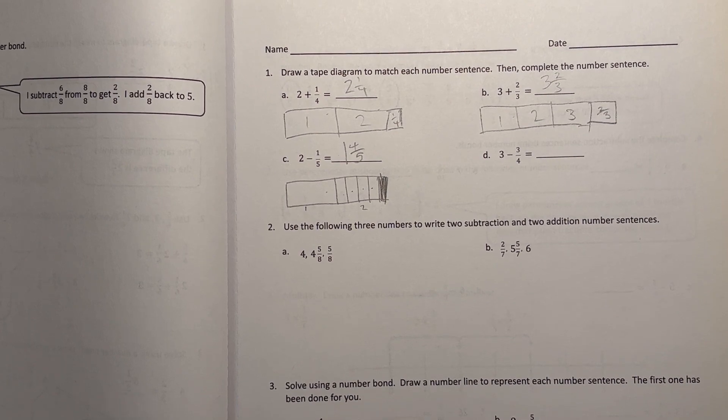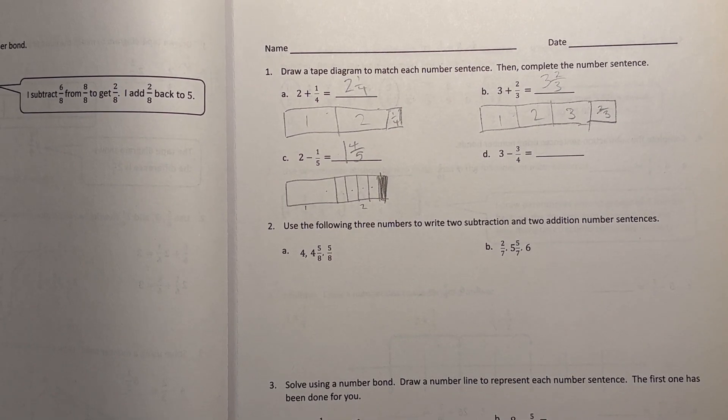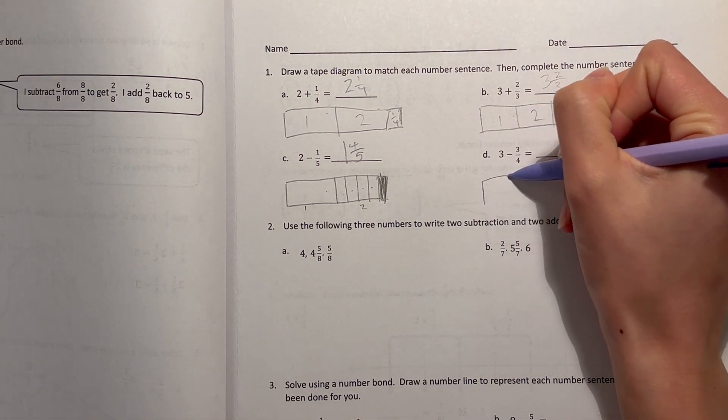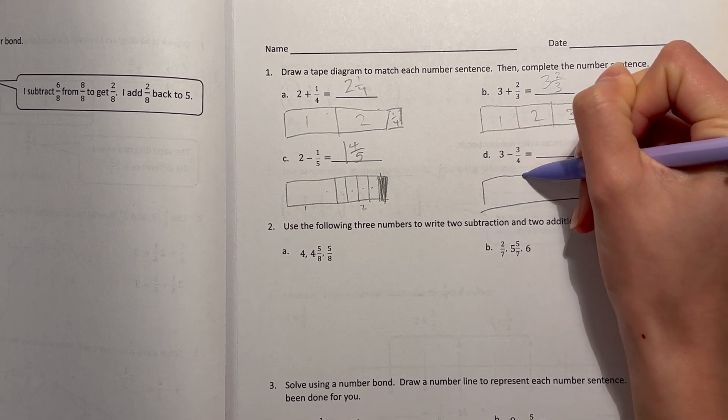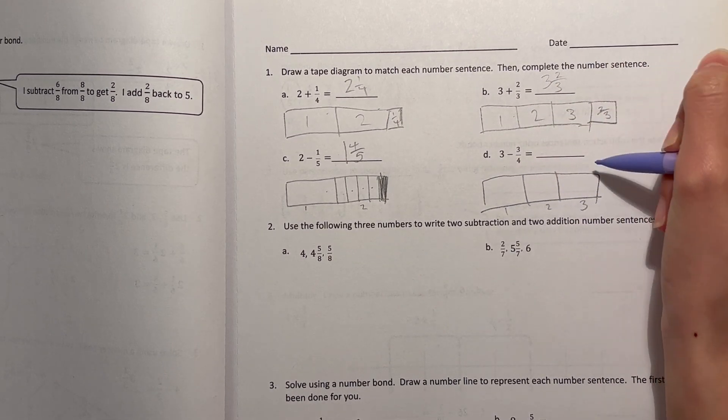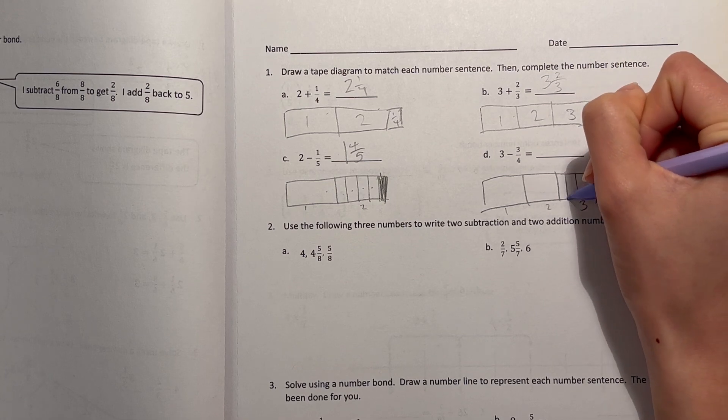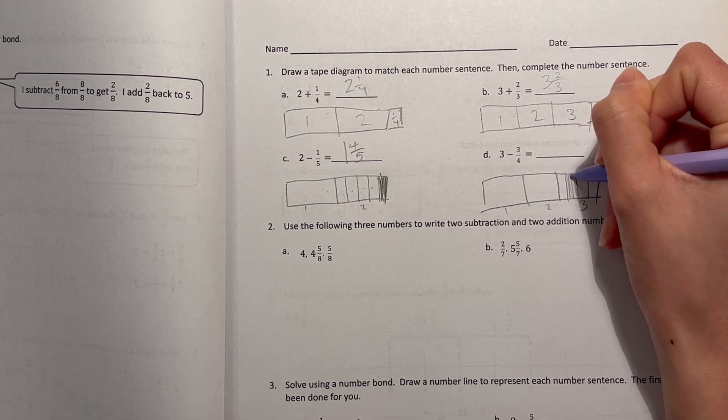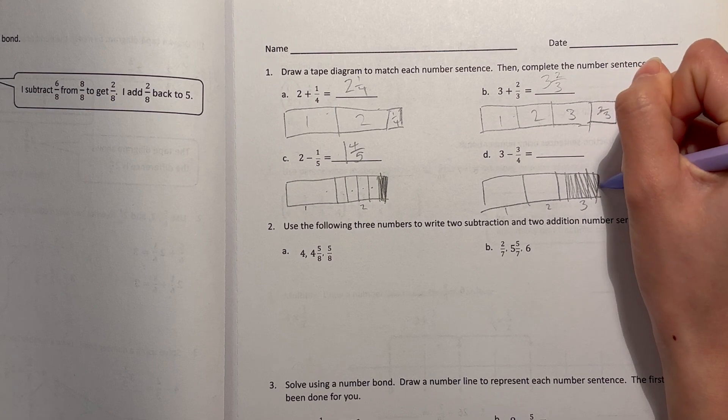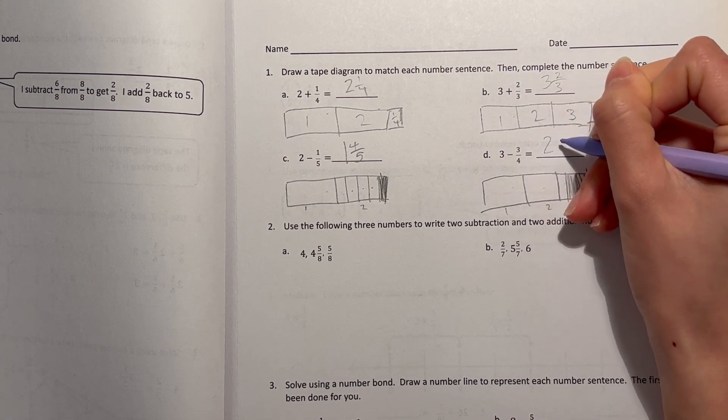All right, and d, 3 minus 3 fourths. That's 1, 2, 3. Minus 3 fourths. I'm gonna split 1 into fourths and shade out the 3 fourths. So that's 2 and 1 fourth remaining.